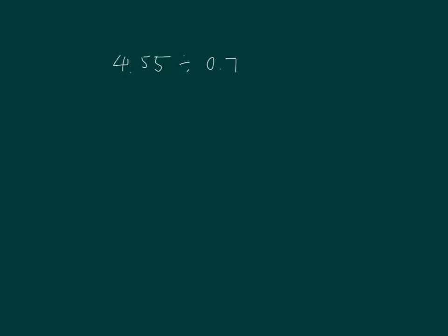Here's that problem. Set it up so we get a whole number in the denominator. 45.5 divided by 7. 7 goes into 45 six whole times. 6 times 7 is 42.